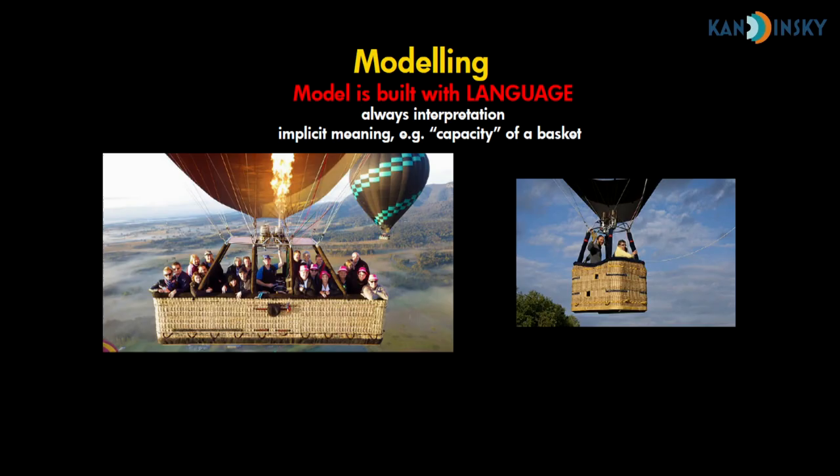If we are modeling for software, we always use language. And when you use language, there's a lot of implicit meaning and a lot of interpretation. For instance, I said the capacity of a balloon in that domain — but that's not only how many people fit in a basket. It's also dependent on the outside temperature. If it's very warm, you can take fewer people; if it's very cold, you can take more. So you should sell tickets for the number of kilos given the outside temperature, but that's not easy to sell.